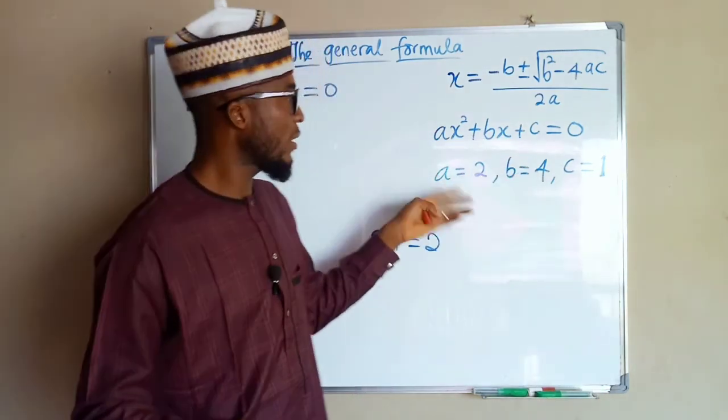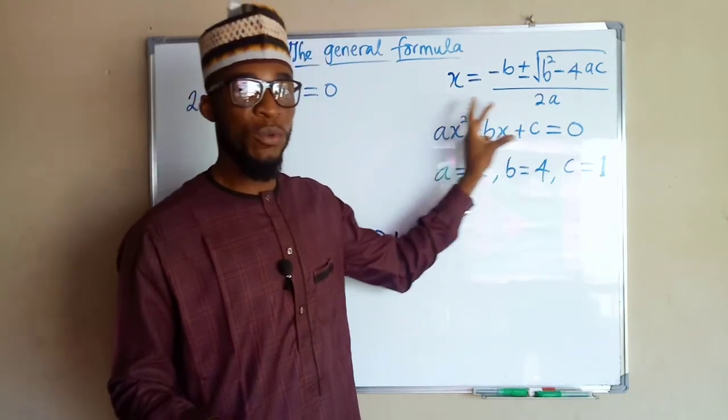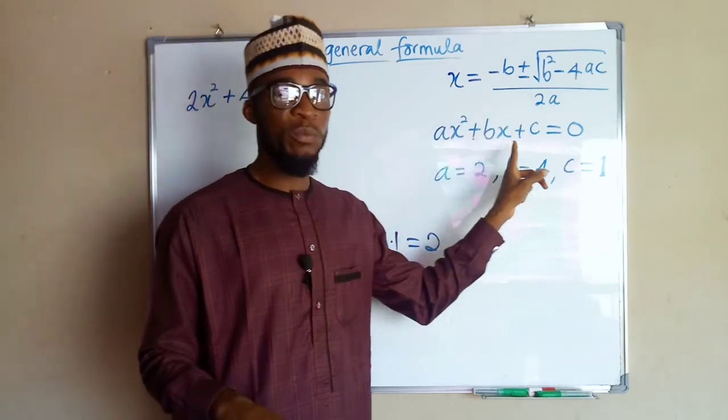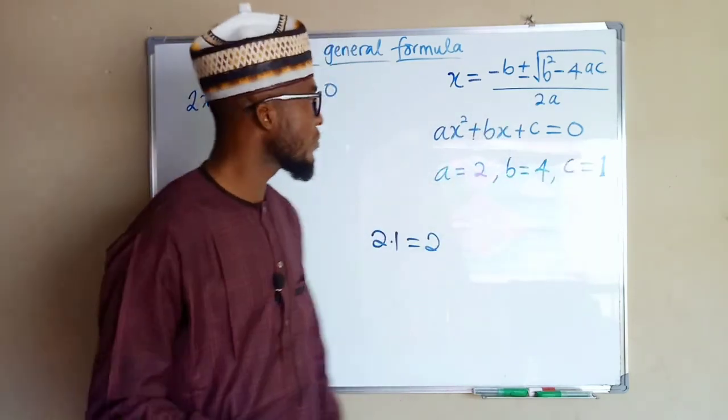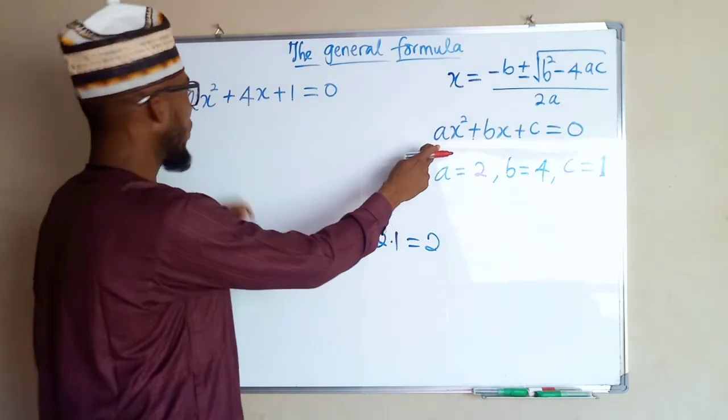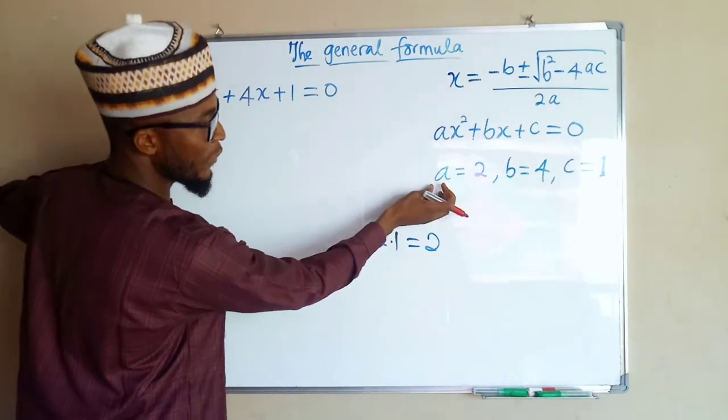I have already extracted my data. This is the general form of a quadratic equation: ax squared plus bx plus c equal to 0. A is the leading coefficient. It corresponds to 2 here. So we have a equal to 2.